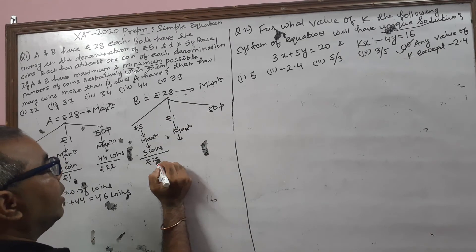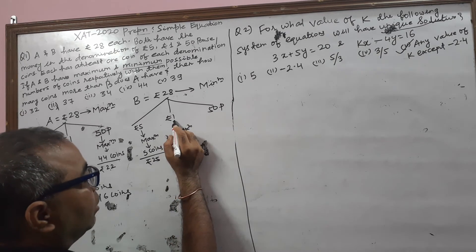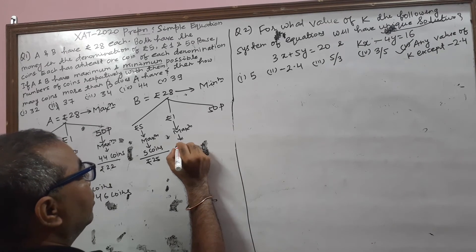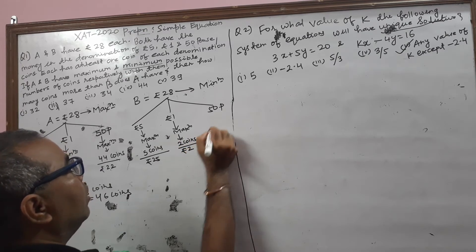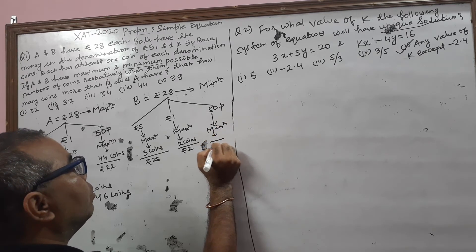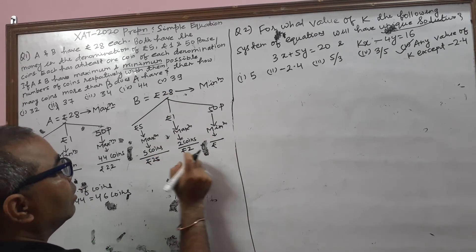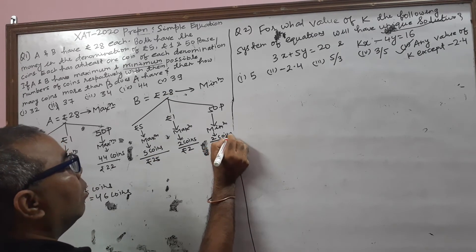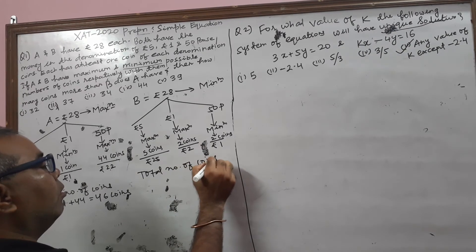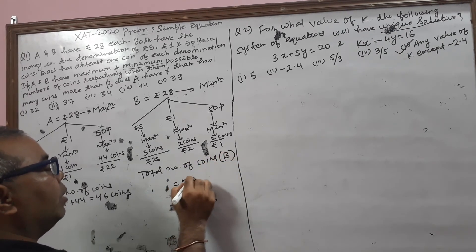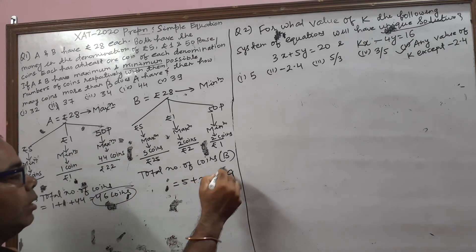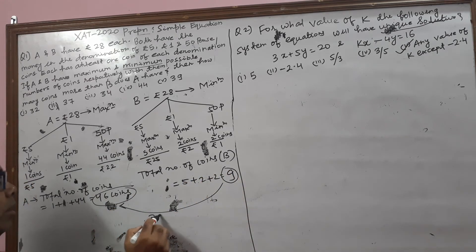So 28 minus 25 is 3 rupees. But this cannot all be rupees 1 because 50 Paise also needs at least one coin. So here, maximum 2 coins of rupees 1, whose value will be rupees 2, and this is the minimum for 50 Paise. Remaining: 25 plus 2 is 27, and 28 minus 27 is 1 rupee, so 2 fifty-paise coins. Total number of coins with B is 5 plus 2 plus 2 equal to 9. So we find the difference between these two: 46 minus 9 equals 37 coins.